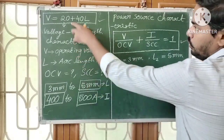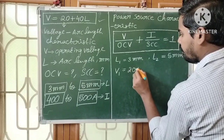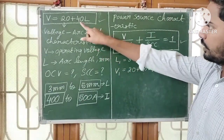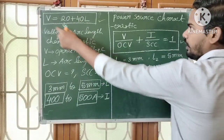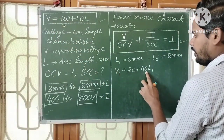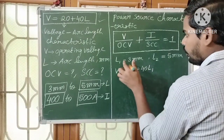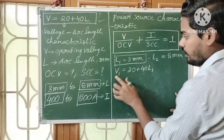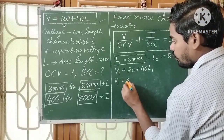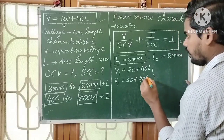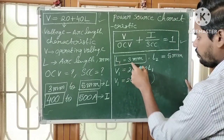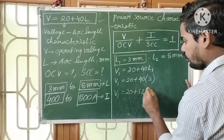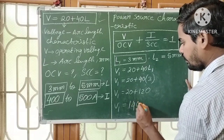Using the voltage arc length characteristic, V1 = 20 + 40·L1. Substituting L1 = 3 mm: V1 = 20 + 40×3 = 20 + 120 = 140 volts. So to produce an arc length of 3 mm, we apply V1 = 140 volts.